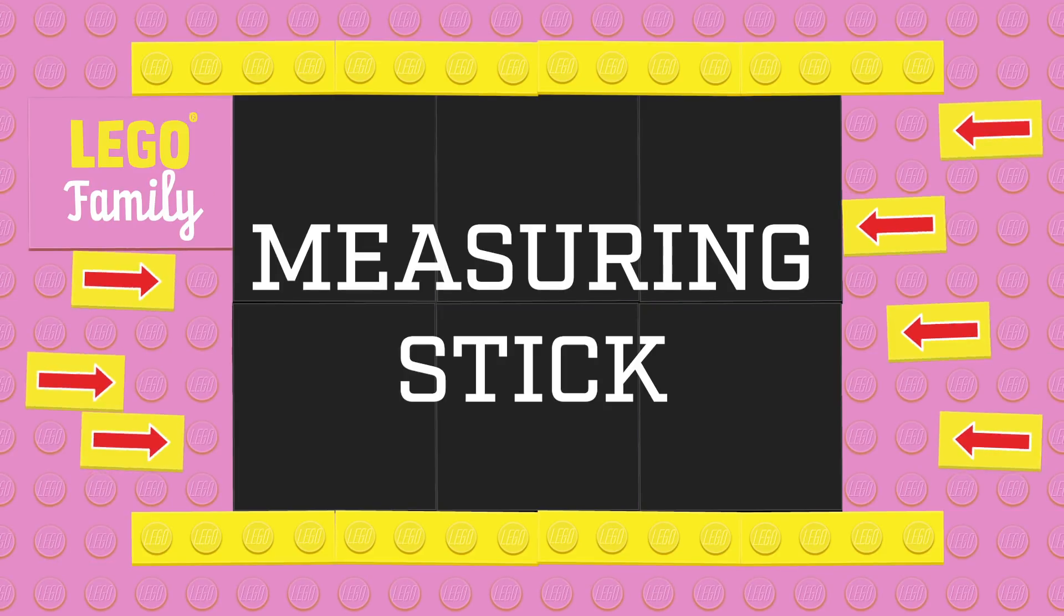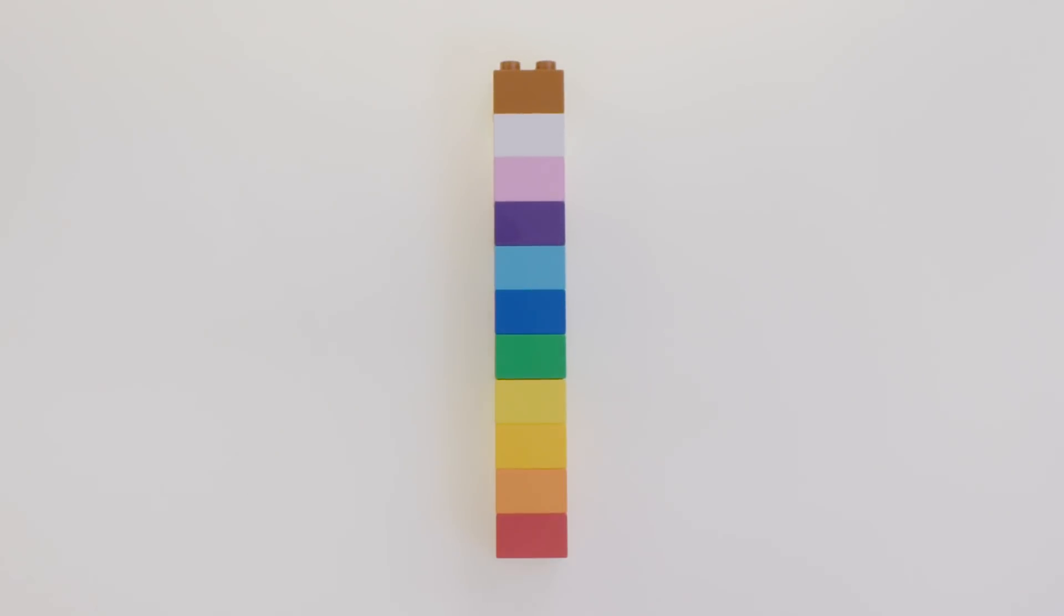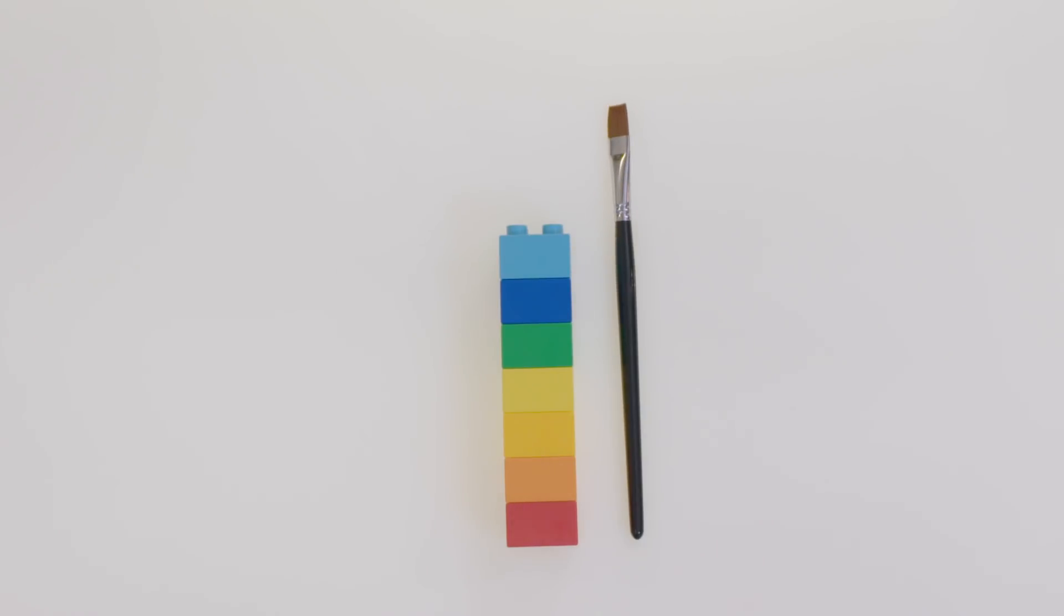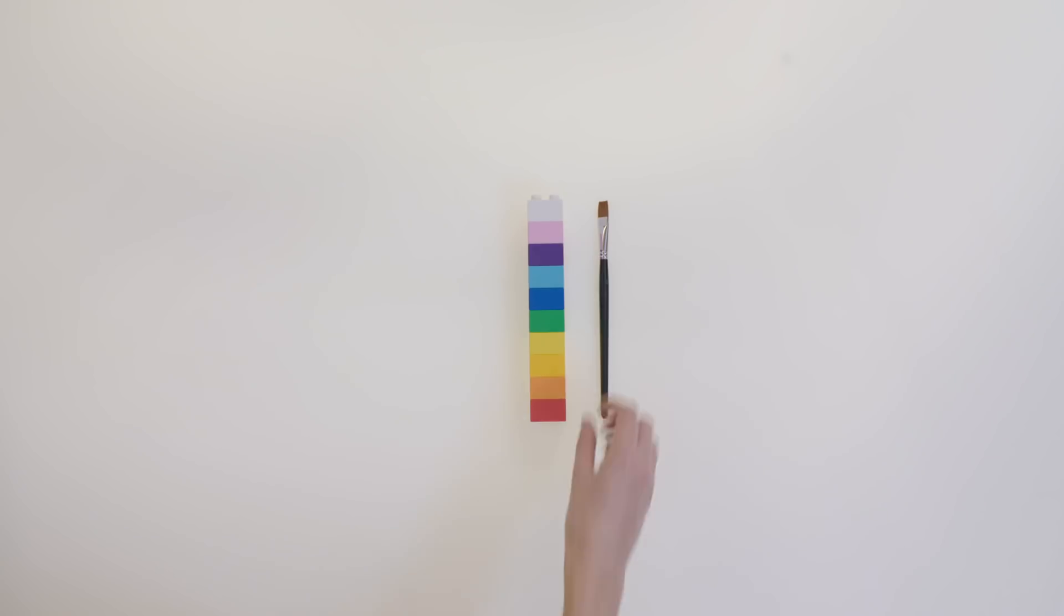Measuring Stick. Why not try building an awesome measuring stick from LEGO Duplo Bricks? You can use it to help your child figure out how big things are, developing their sense of relativity. Let your child choose different things from around the house to measure. Anything goes.